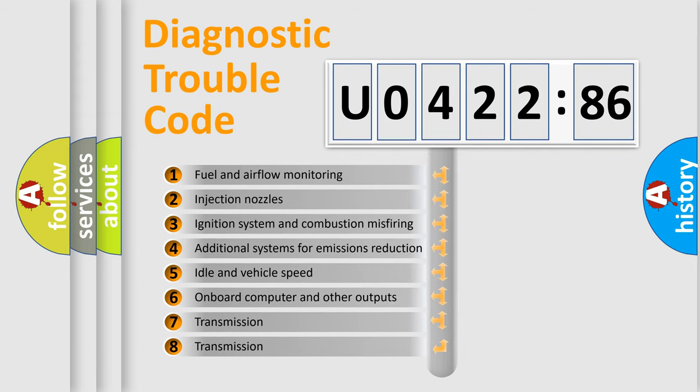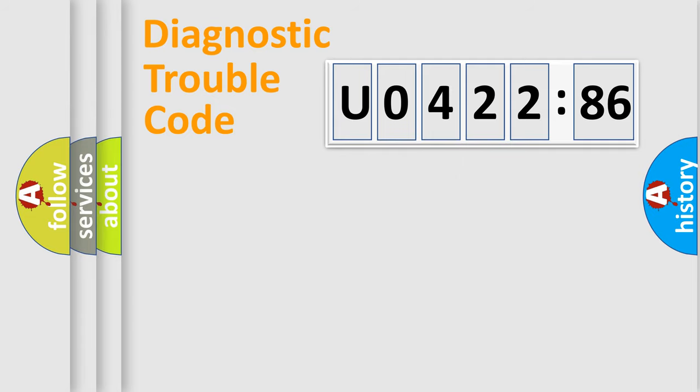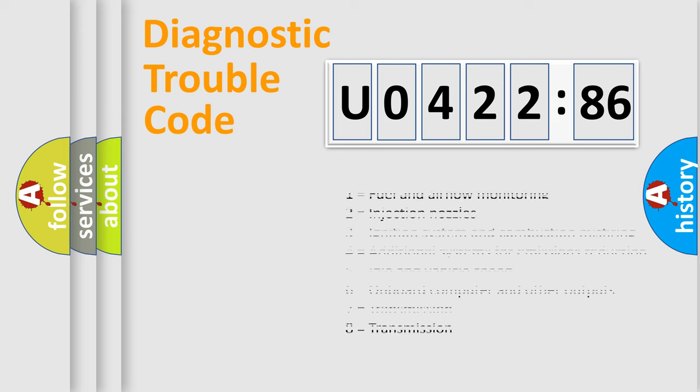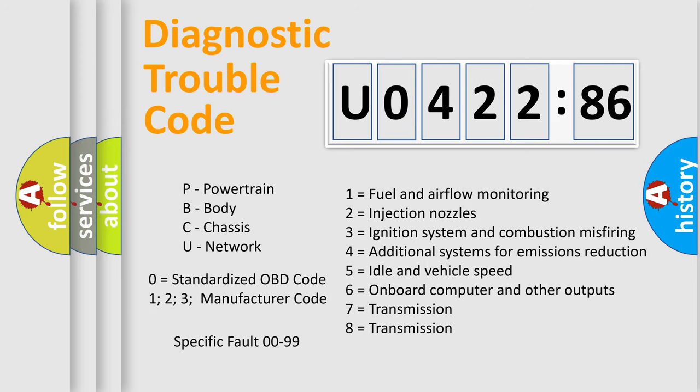The third character specifies a subset of errors. The distribution shown is valid only for the standardized DTC code. Only the last two characters define the specific fault of the group. The add-on to the error code serves to specify the status in more detail, for example, open or short to ground. Let's not forget that such a division is valid only if the second character code is expressed by the number zero.